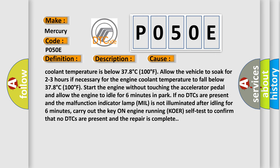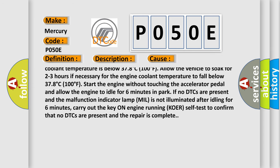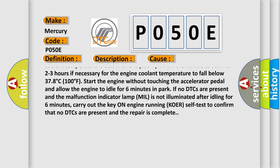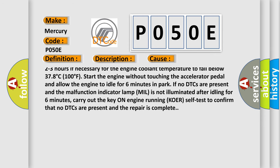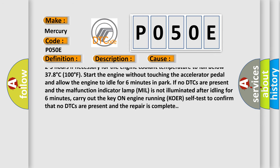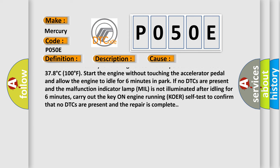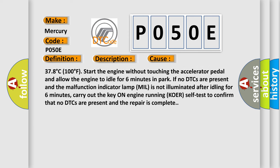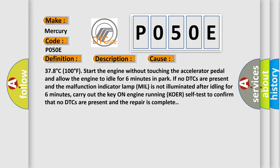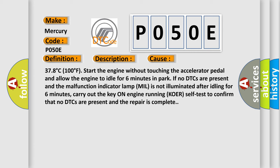Start the engine without touching the accelerator pedal and allow the engine to idle for 6 minutes in park. If no DTCs are present and the malfunction indicator lamp (MIL) is not illuminated after idling for 6 minutes, carry out the key on engine running (KOER) self test to confirm that no DTCs are present and the repair is complete.